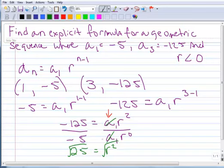And then we take the square root of each side, so we're going to get r is plus or minus 5. But remember up here it said that r is less than 0. So now I know that my r is negative 5.